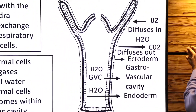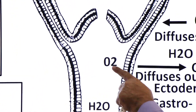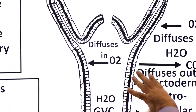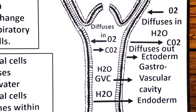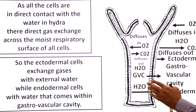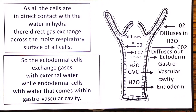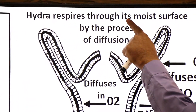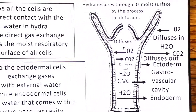The endodermal cells exchange gases with the water inside the gastro-vascular cavity. Oxygen present in that water diffuses into the endodermal cells, while carbon dioxide is released by diffusion. Thus, Hydra carries out gas exchange through its moist respiratory surface entirely by the process of diffusion.